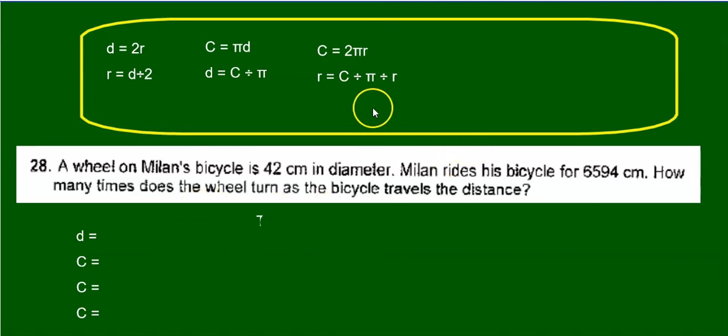So let's try this example here. I've written down some of the equations that we've had so far. Let's try number 28. A wheel on Milan's bicycle is 42 centimeters in diameter. So diameter, 42 centimeters. Milan rides his bicycle for 6,594 centimeters. How many times does the wheel turn as the bicycle travels the distance?